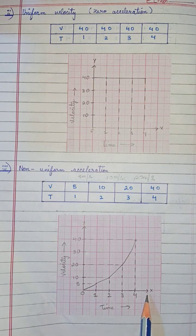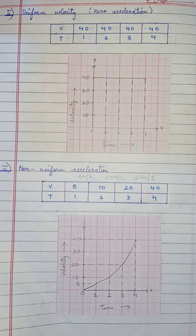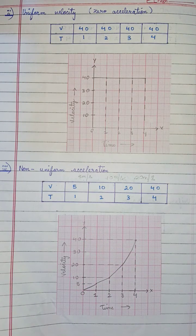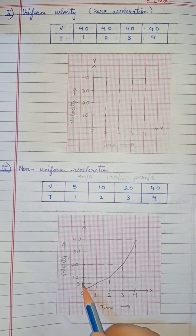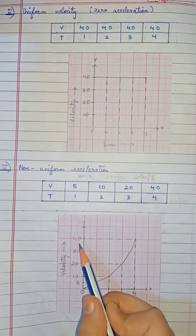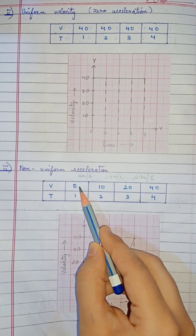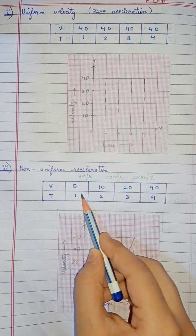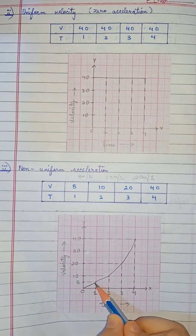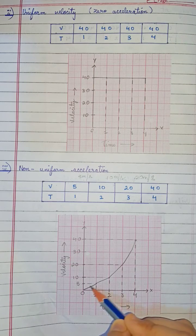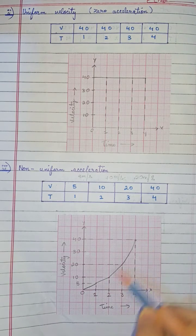Now let's look at the graph plotted here. The x-axis represents time in seconds and the y-axis represents velocity in meters per second. We mark all the points — 5, 10, 20, and 40 — and plot all the points with respect to the table given, then join all the points.